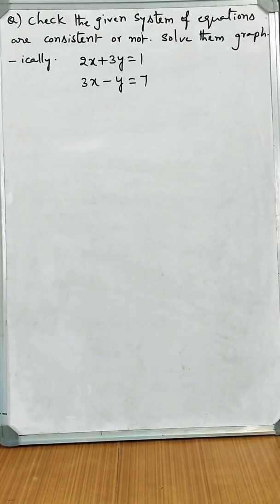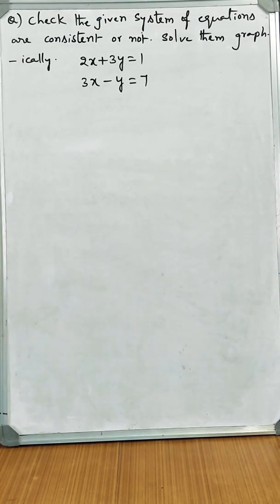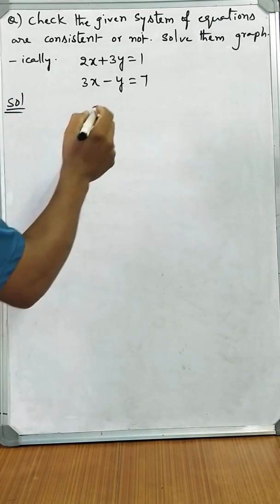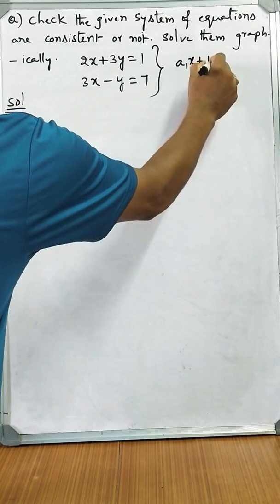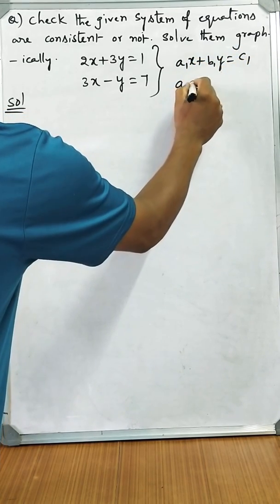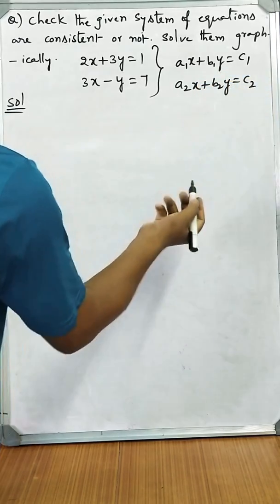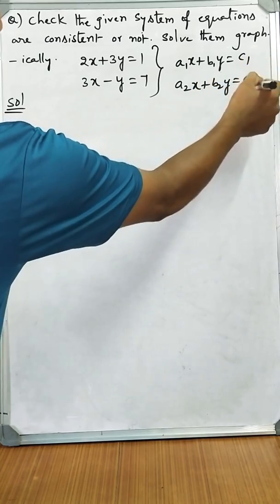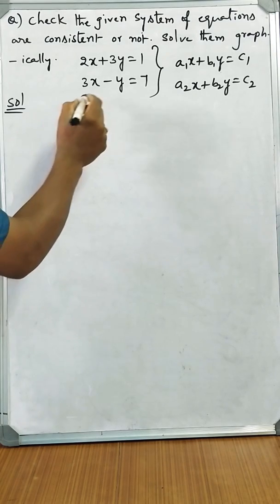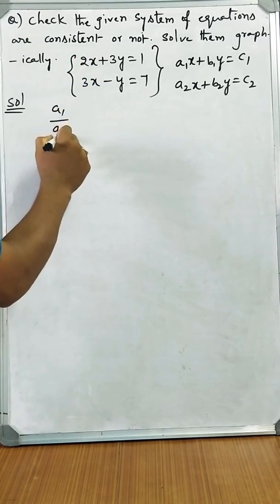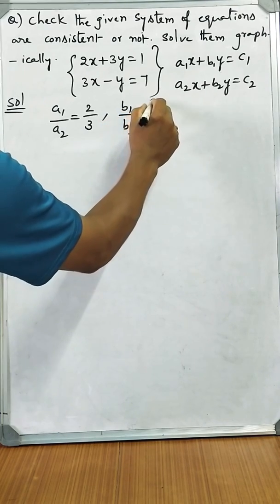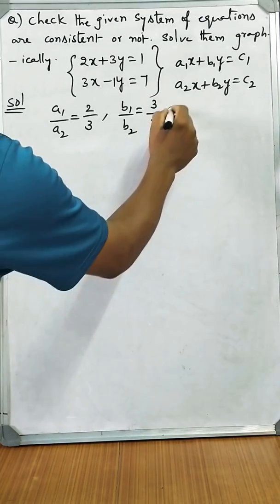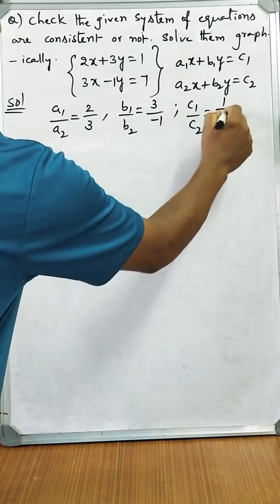To verify the consistency, you have to write the coefficients of x and coefficients of y. I would like to take these two equations in standard form: A1x plus B1y equals C1, and A2x plus B2y equals C2. Here, the ratio of x coefficients A1 by A2 is equal to 2 by 3. The ratio of y coefficients B1 by B2 is equal to 3 by minus 1. And C1 by C2, the ratio of constants, is 1 by 7.